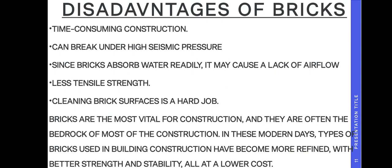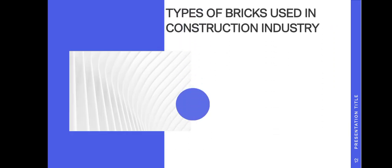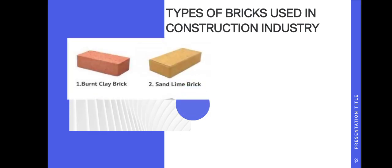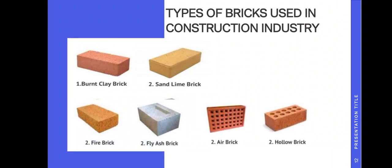Types of bricks used in building construction have become more refined with better strength and stability at lower cost. The types of bricks used in the construction industry are: burnt clay brick, sand lime brick, fire brick, fly ash brick, air brick, and hollow brick. These are the types of bricks used in the construction industry.